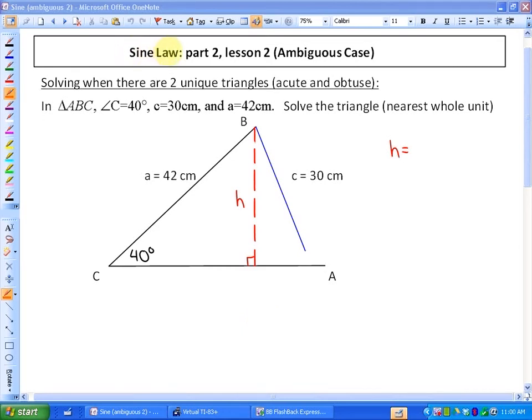Alright, this lesson is called the Sine Law Part 2 Lesson 2. In Part 2 Lesson 1, we looked at how to defend the ambiguous case, or how to determine when there are 0, 1, or 2 unique triangles given some certain measurements. But we didn't go beyond that.